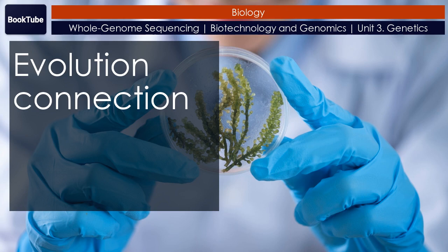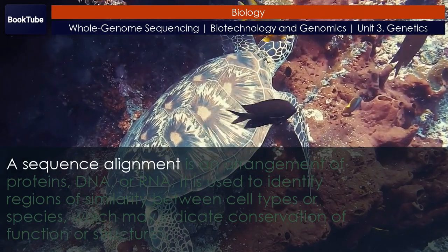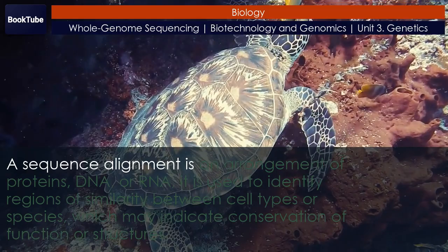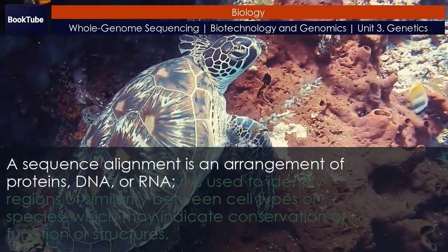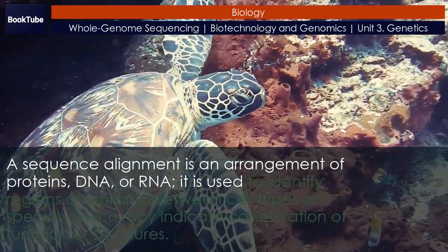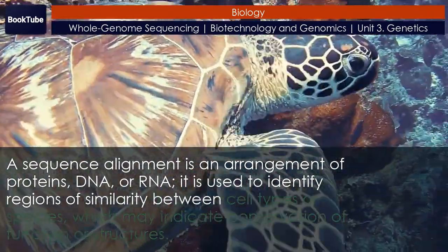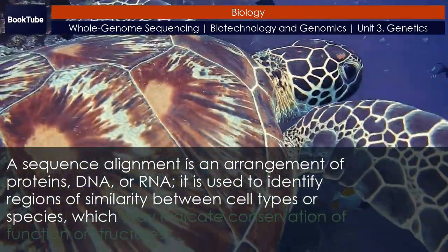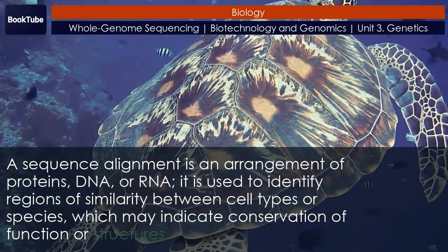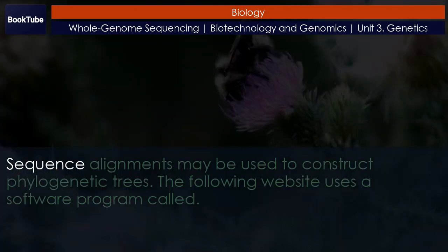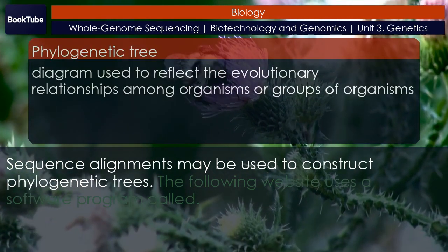Evolution connection: Comparing sequences. A sequence alignment is an arrangement of proteins, DNA, or RNA used to identify regions of similarity between cell types or species, which may indicate conservation of function or structures. Sequence alignments may be used to construct phylogenetic trees.